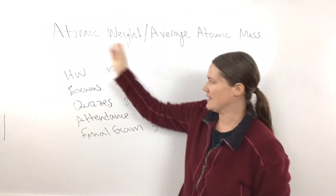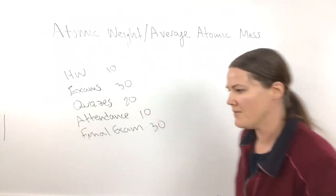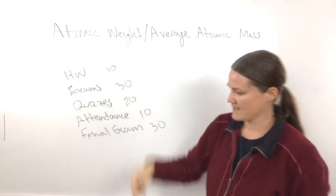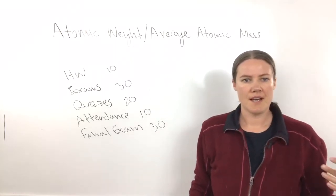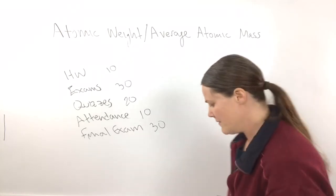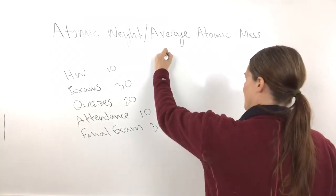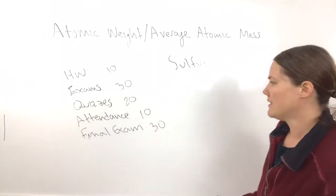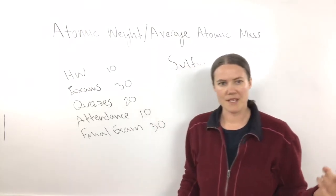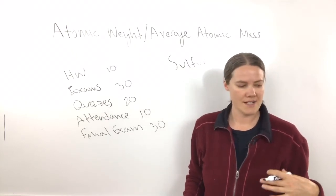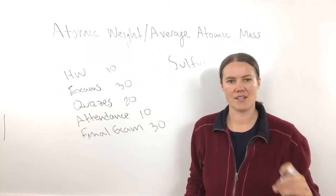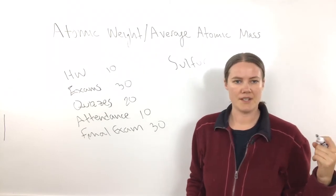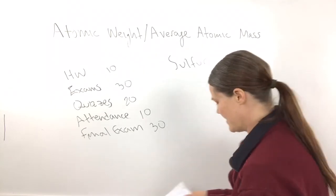So what is the atomic weight a weighted average of? It's the average atomic mass of the different isotopes of an element. The example we're going to do is for sulfur. Remember, isotopes are the same element with different mass numbers — each isotope of sulfur has a different number of neutrons, so the atomic mass of each isotope is different.